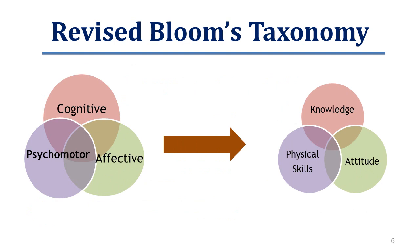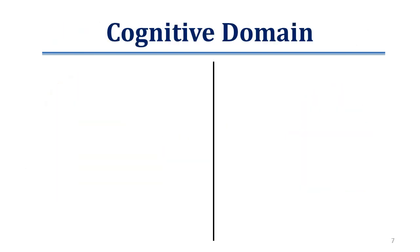Bloom's has also stated that learning is not possible only in one domain, but it is a combination of all three domains. One cannot say that learning is only happening in the cognitive or affective domain — all three domains are equally essential for better learning. While framing learning outcomes, they must be woven through all three domains and should not focus on only one.